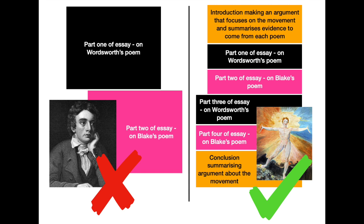So don't write half an essay talking about Wordsworth's poem and half an essay talking about Blake's poem. Instead, begin with an introduction that makes an argument focusing on the movement — we've seen plenty of examples throughout this video. Then in your first part talk about the first poem, and in the second part the second poem. This is the sequential four-part plan that you came up with earlier. Once you've written your four paragraphs, conclude by summarising your argument about the movement. It's a simple, clear way to make sure that the two poems you've chosen are providing the very best evidence to make the argument you want to make about the Romantic movement.